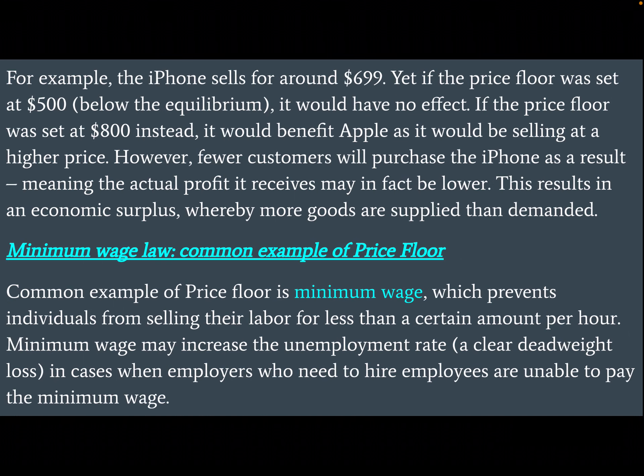For example, the iPhone sells for around $699. If the price floor was set at $500, below the equilibrium, it would have no effect. If the price floor was set at $800 instead, it would benefit Apple as it would be selling at a higher price. However, fewer customers will purchase the iPhone as a result, meaning the actual profit it receives may in fact be lower. This results in an economic surplus whereby more goods are supplied than demanded.